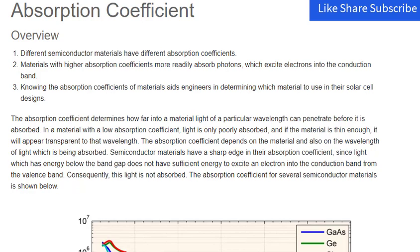Absorption coefficient: Different semiconductor materials have different absorption coefficients. Materials with higher absorption coefficients more readily absorb photons, which excite electrons into the conduction band. Knowing the absorption coefficients of materials aids engineers in determining which material to use in their solar cell designs.